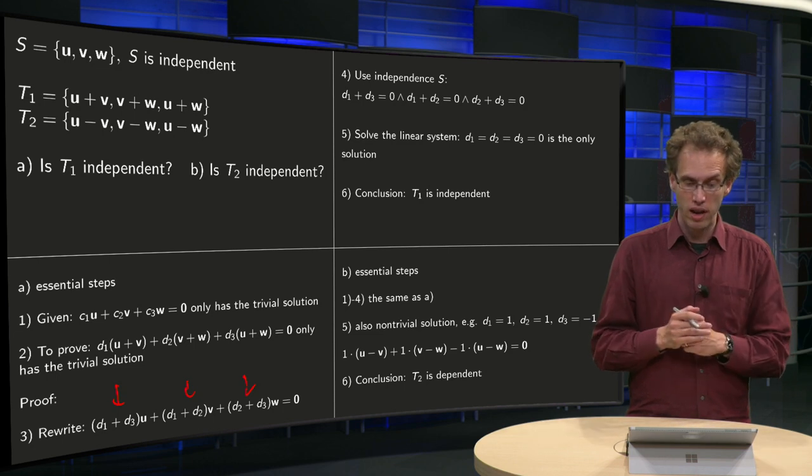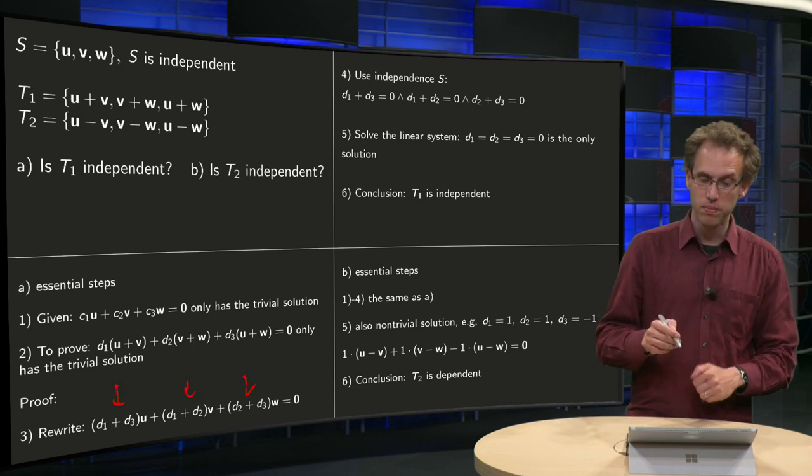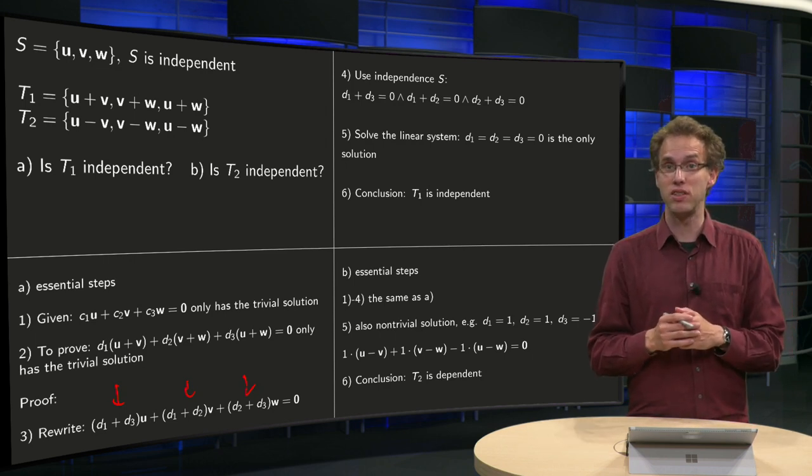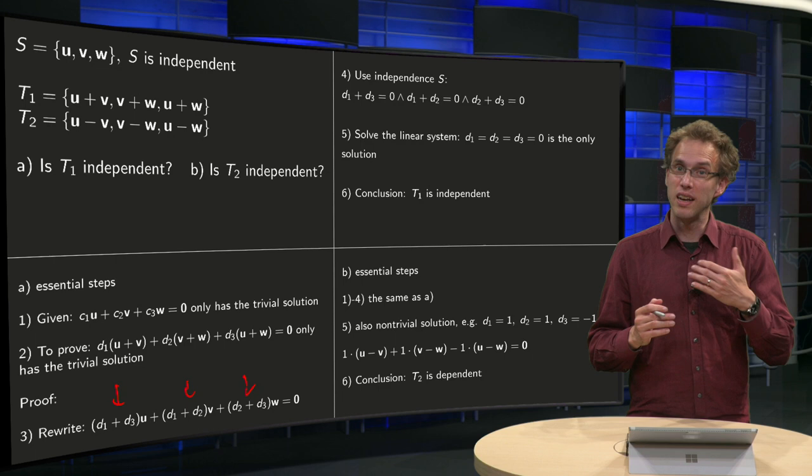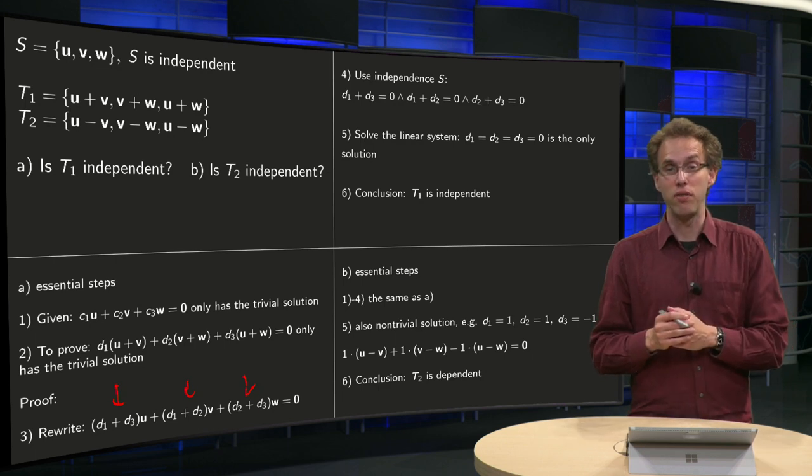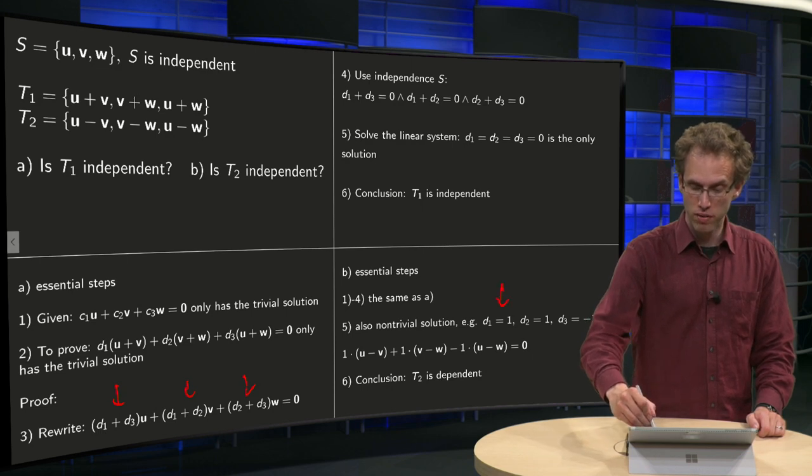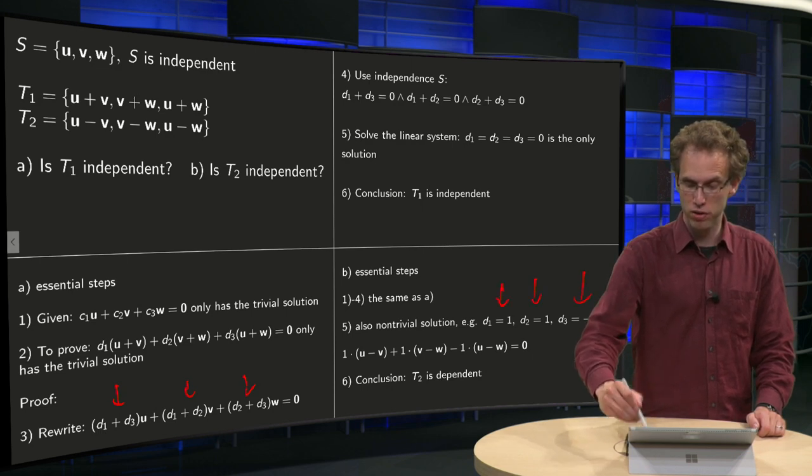So then we arrive at step 5. Now we have to solve a slightly different linear system and now we see that we get also a non-trivial solution, for example, you get this non-trivial solution: d1 equals 1, d2 equals 1 and d3 equals minus 1.